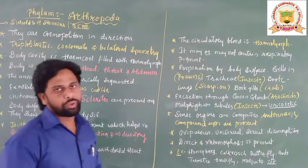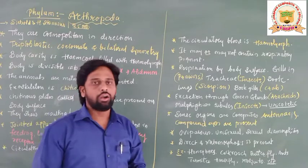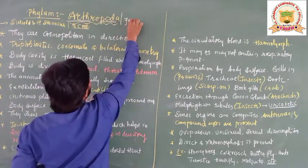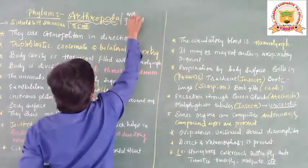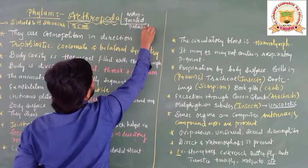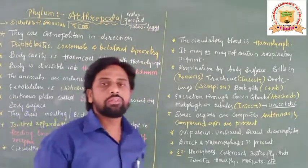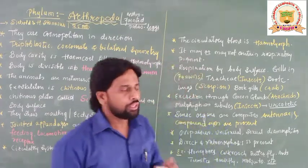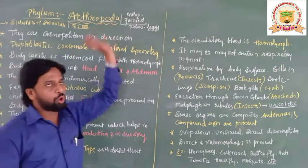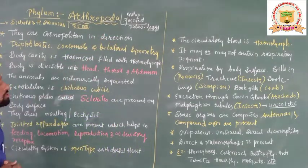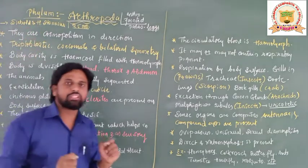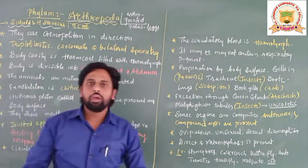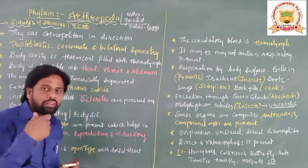Before we go to the content of this topic, let us discuss what exactly the meaning of Arthropoda is. There are two words: 'Arthro' means jointed, whereas 'poda' means legs. So this group of animals is commonly called jointed-legged animals because they show jointed appendages. The word Arthropoda was first coined by two scientists — C. Bold and H. Stanius — who gave the name by observing its characteristics.